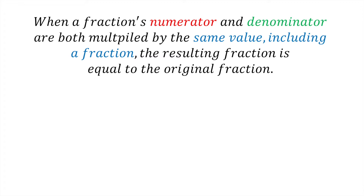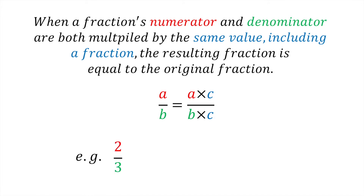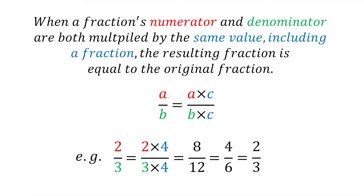The third fraction rule we need to know is that when a fraction's numerator and denominator are both multiplied by the same value, including a fraction, the resulting fraction is equal to the original fraction. For example, if we have 2 thirds and we multiply the numerator and denominator both by 4, we get 8 divided by 12, and 8 divided by 12 is equal to 2 thirds.